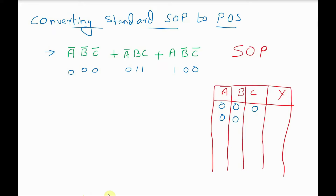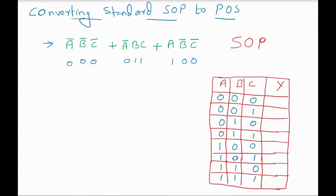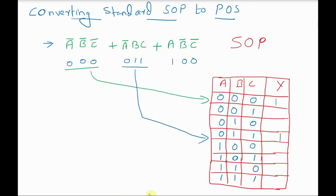The 3-bit combinations are: 0,0,0 — 0,0,1 — 0,1,0 — 0,1,1 — 1,0,0 — 1,0,1 — 1,1,0 — 1,1,1. In the given SOP expression, the terms A̅B̅C̅ corresponds to 0,0,0, so we provide output 1 there. The next term A̅BC corresponds to 0,1,1, so we put 1 there as well. The last term AB̅C̅ corresponds to 1,0,0, so we put 1 there. These binary forms represent the given SOP expression.